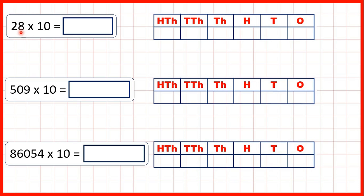Now for these questions we need to multiply whole numbers by 10 and we can do that just by writing a zero on the end of the number. So 28 times 10 is 280.